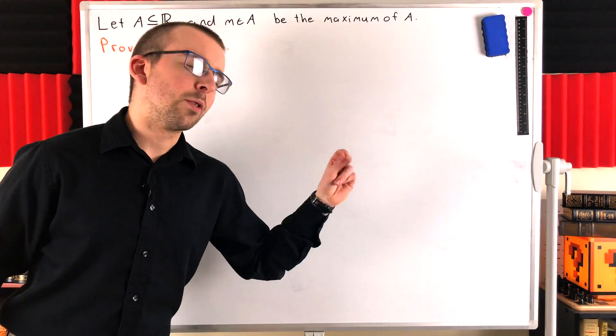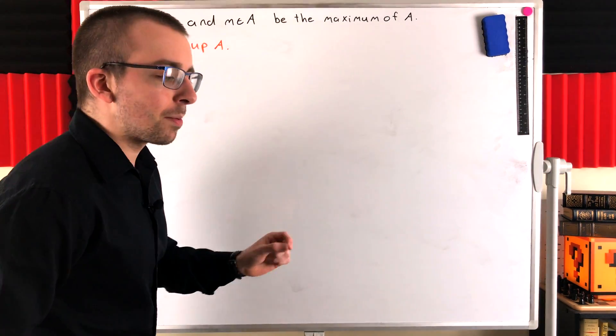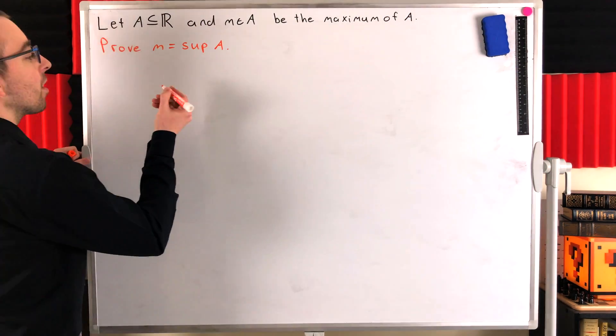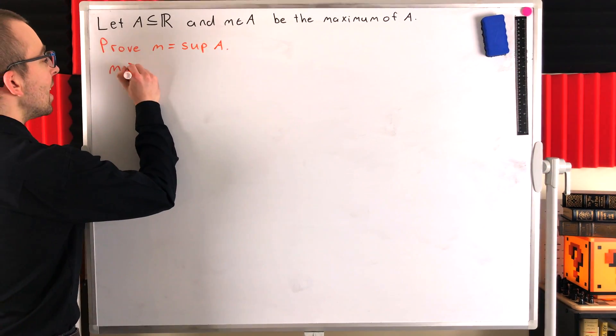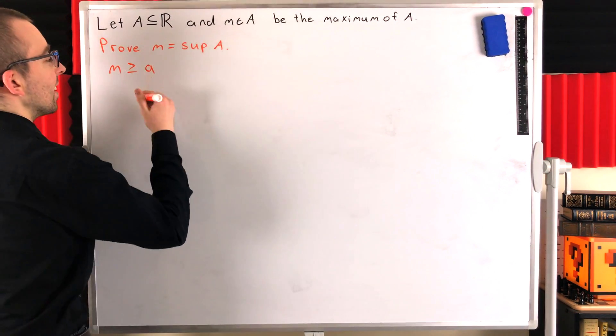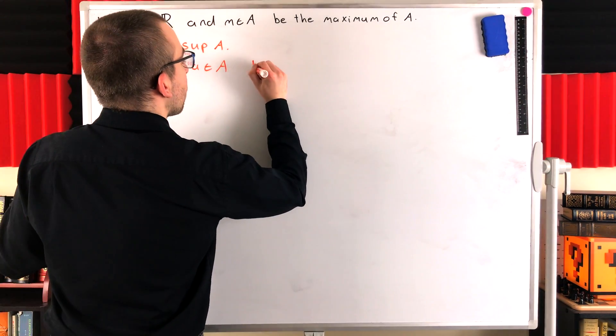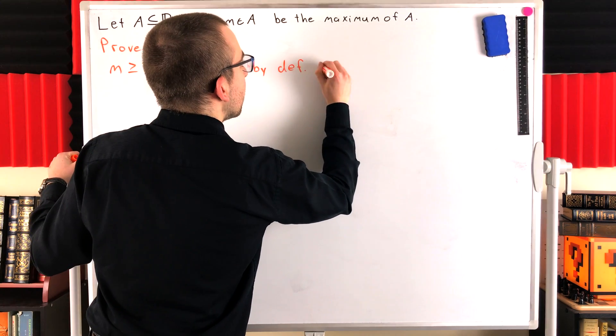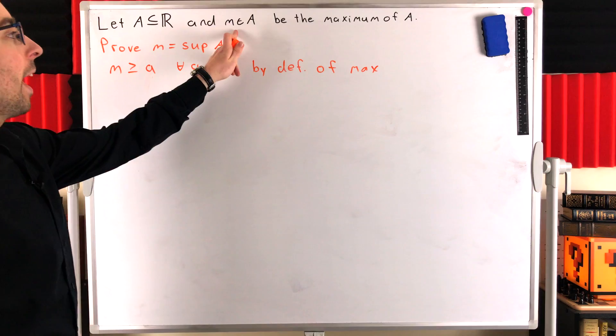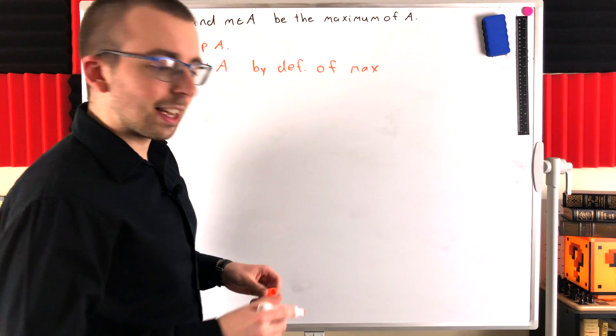All right, easy peasy, let's just get into it. So M is the maximum of A. First, to show that M is the supremum, we need to show that M is an upper bound of A. In this case that's completely trivial. M is greater than or equal to little a for all elements of the set big A. How do we know that? Well that's by definition of maximum. M is the maximum of A, so by definition M is greater than or equal to every element of the set A.